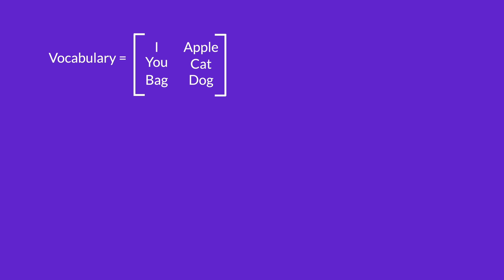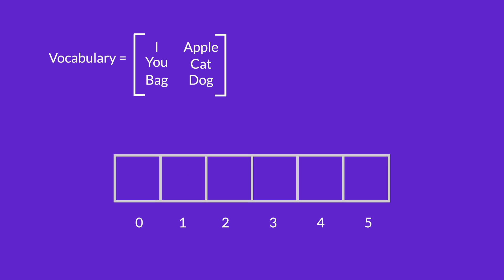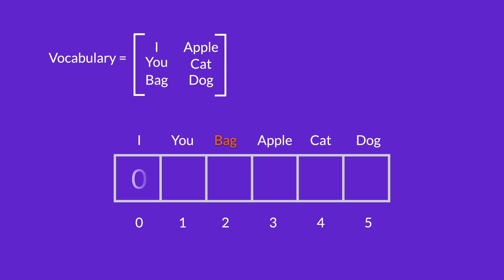You might have heard of one-hot encoding in other contexts too, but in the context of text representation, what it does is create one really long vector that is as long as the number of words that you have in your vocabulary. To represent each word, you fill this vector with zeros, except for the cell that corresponds to the word you're trying to represent. As you can see, this creates a very sparse vector, and it is not the most efficient use of space.